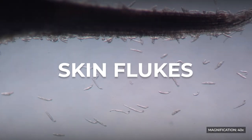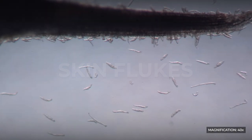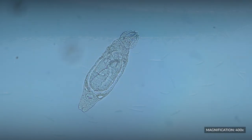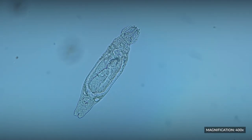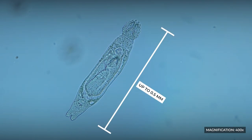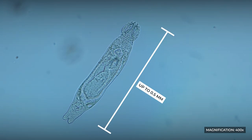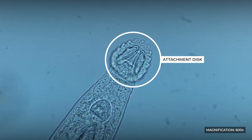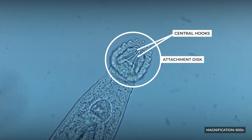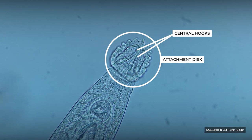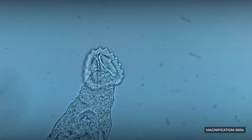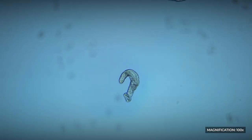Skin flukes: The genus Gyrodactylus, or skin flukes, has over 500 species. The worm's body is elongated, flattened, and up to half a millimeter long. At the posterior end there is an attachment disc equipped with two large central hooks and several smaller hooks arranged in a circular pattern around the disc. The anterior end of the body usually has two lobes.